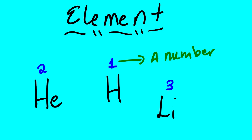I hope you can see the trend. Element number five, which is boron, will have five electrons and five protons. Element number 20, which is calcium, will have 20 electrons, 20 protons, and its atomic number is 20.